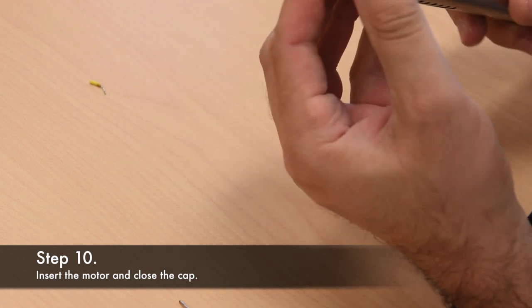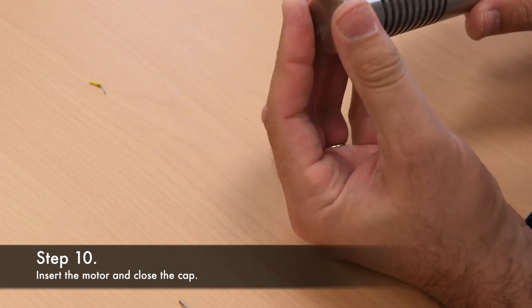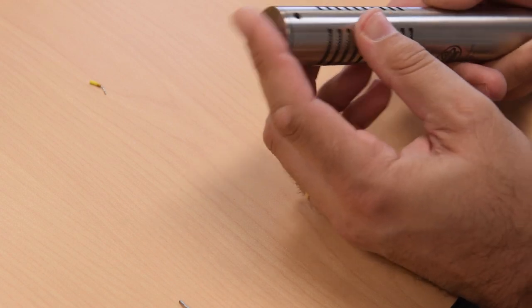At this point, insert the ribbon motor fully, align the screw holes, and attach the top cap with the two screws.